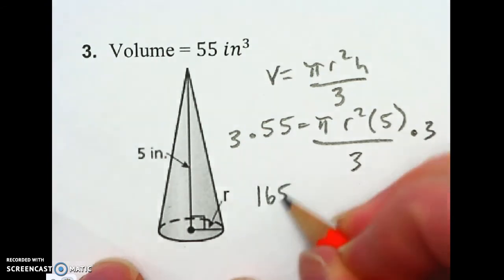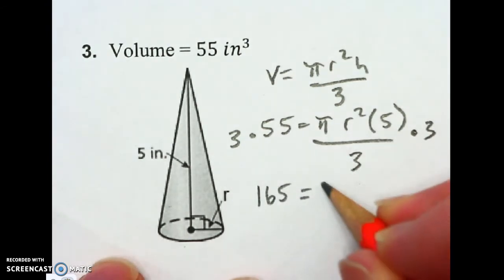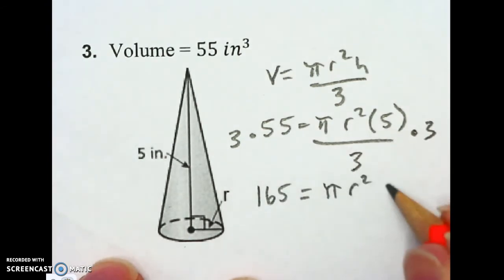So now we've got 165 equals pi R squared and 5. So we've got these 3's canceled out.